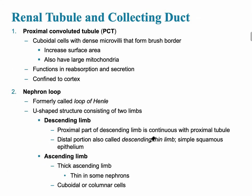The proximal convoluted tubule has cuboidal-looking cells with dense microvilli that form the brush border. This is where there is a significant amount of reabsorption and also secretion, and it is confined primarily to the renal cortex.